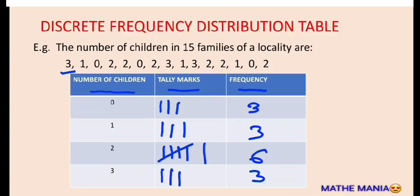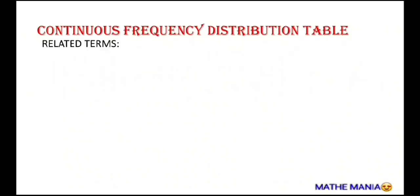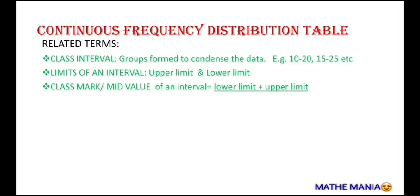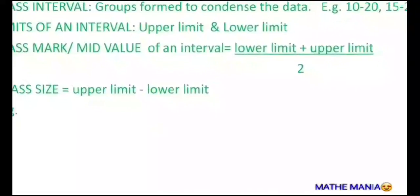This way we get the discrete frequency distribution table. Next we have the continuous frequency distribution table. Terms related to it: the first one is class interval — the groups made to condense the data, like 10 to 20, 20 to 30, etc. Next is limits of an interval — upper and lower limits. Then we have class marks, calculated as: lower limit plus upper limit divided by 2. Class marks are also called mid values. Then comes class size, equal to upper limit minus lower limit.